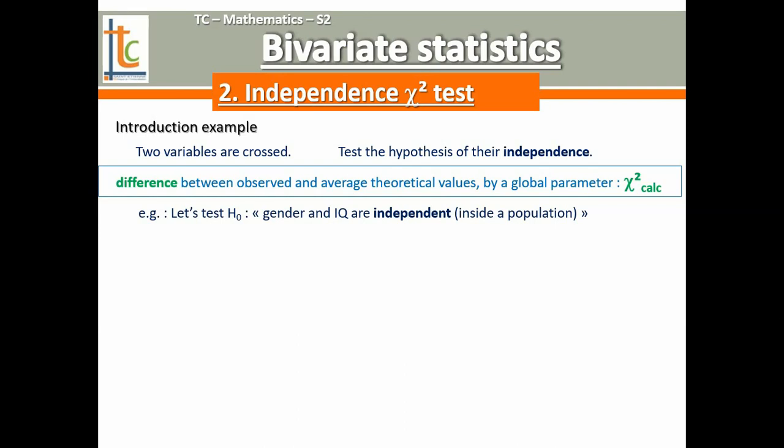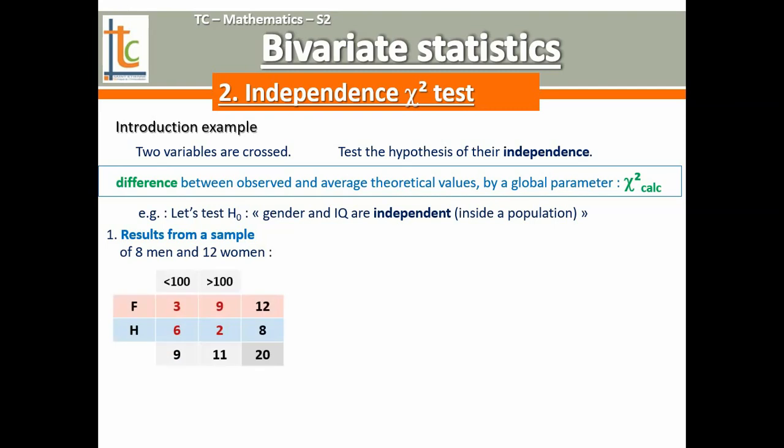We will try to reject this hypothesis thanks to results obtained from a sample — this is the only way we can test a hypothesis. Taking a sample from the population, testing this sample, and trying to extrapolate to the population. Let's take a sample, which is very small here, but that doesn't matter for the method. 8 men and 12 women have been tested with an IQ test, and here are the results, very simply displayed. Only people who had a result less than 100 and people who had a result more than 100.